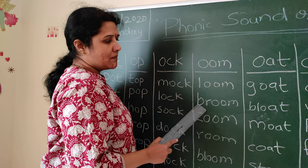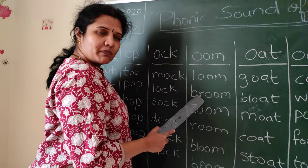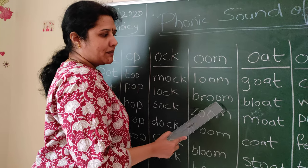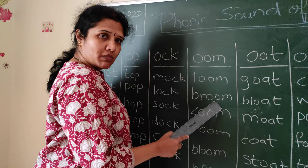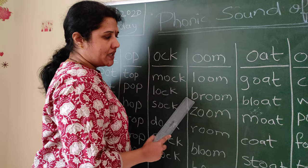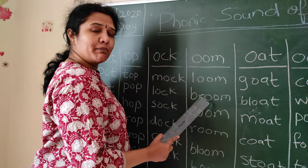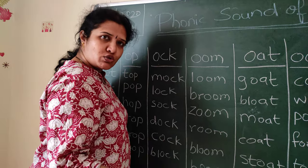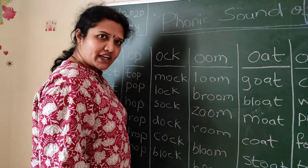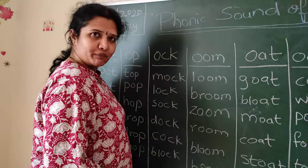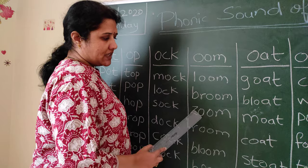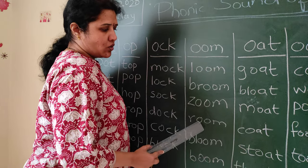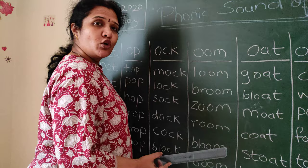Then B-R — what is the sound of BR? BR plus OOM is BROOM. B-R-O-O-M — BROOM. What do you use a broom for? To clean the floor. Then Z-O-O-M — ZOOM, R-O-O-M — ROOM.